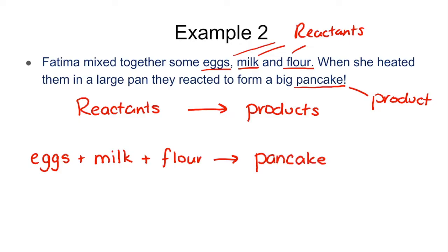Notice that I don't write the word 'big' — I don't care how big the pancake is, that has no effect on my equation. I simply want to write the actual product that I make. Let's have a look at another example.